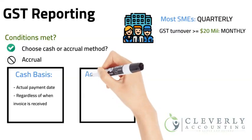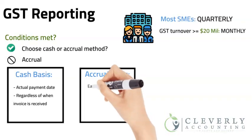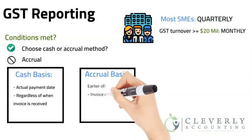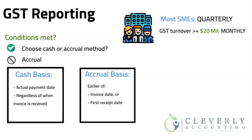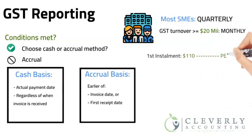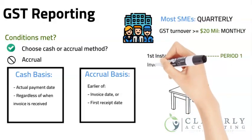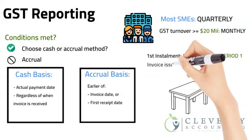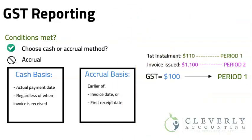Under the accrual basis, the total GST is attributed to the earlier of the tax period in which the invoice was issued or the period of the first receipt from the sale. For example, if the purchaser pays an installment of $110 in the current tax period (period 1) to purchase a desk for $1,100, but the invoice was issued for $1,100 in the next GST period (period 2), then all $100 of GST is attributed to period 1 and not period 2 when the invoice is issued.